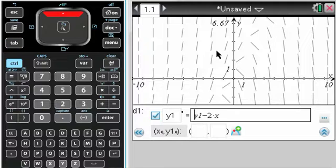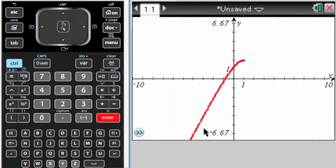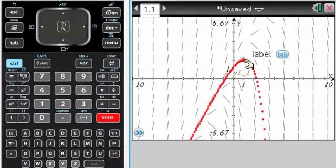So I press tab and then arrow back up. I can add an initial condition. So let's say my initial condition is 1, 2. Press enter and you can see it kind of fills it in for us.